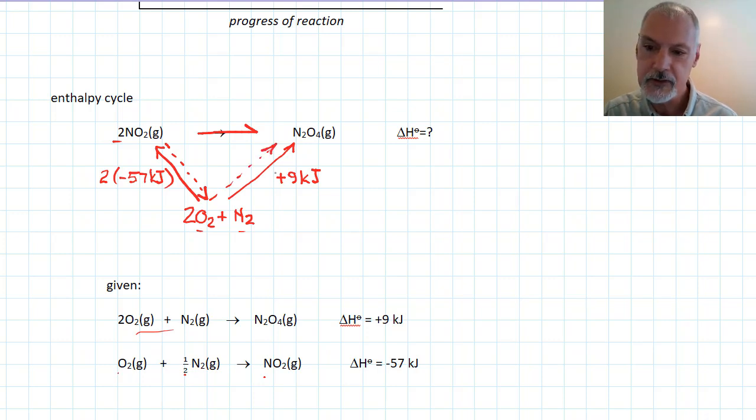Now, the first thing I notice is this arrow and this arrow are going in the same direction, so I can leave this alone. However, I want to go in the opposite direction to the given information I'm told here. So what that requires then is changing this information. So if I want to go in the other direction, this would be 2 times positive 57 kilojoules.